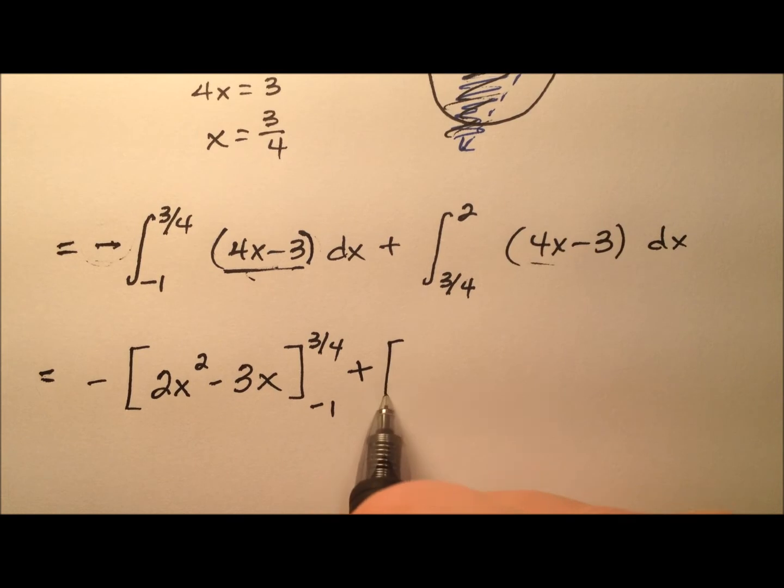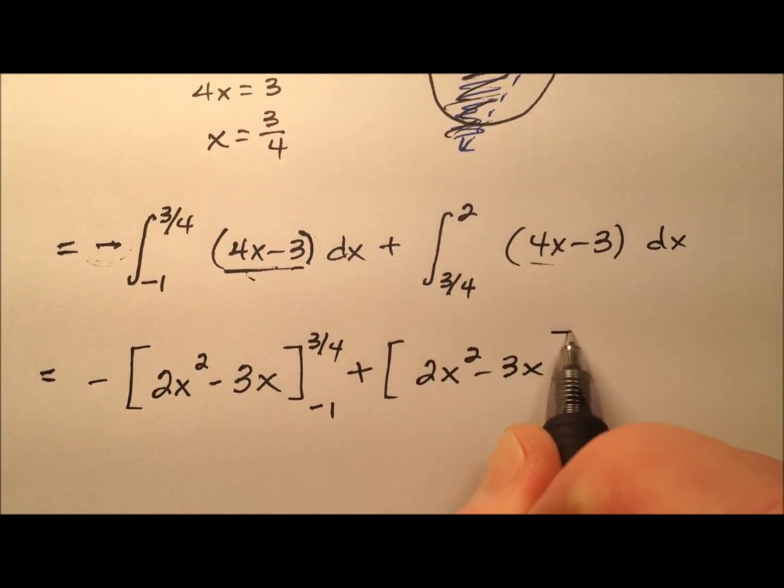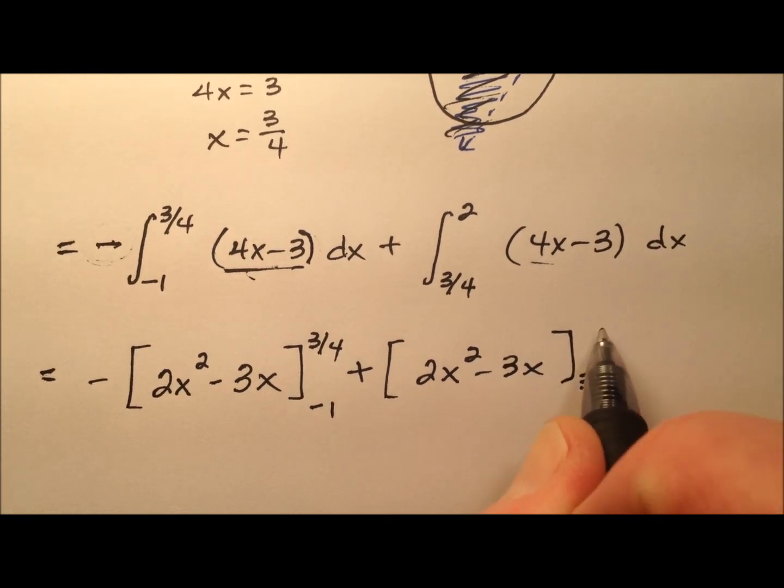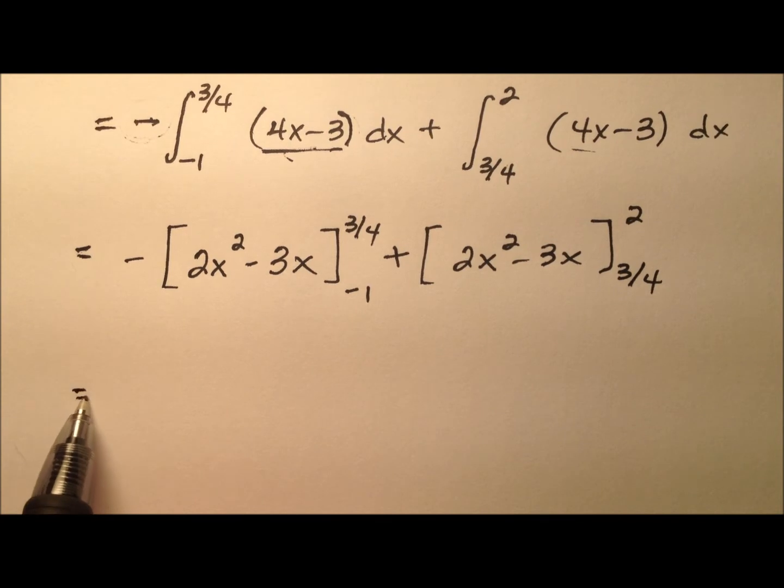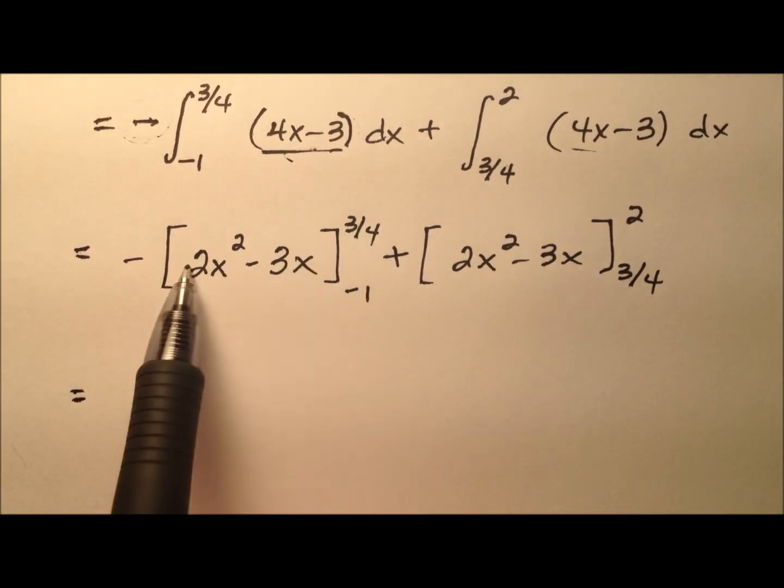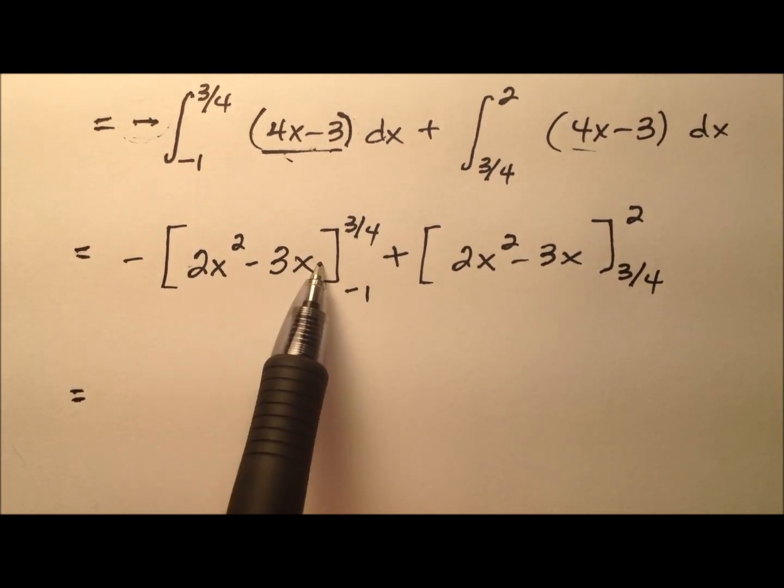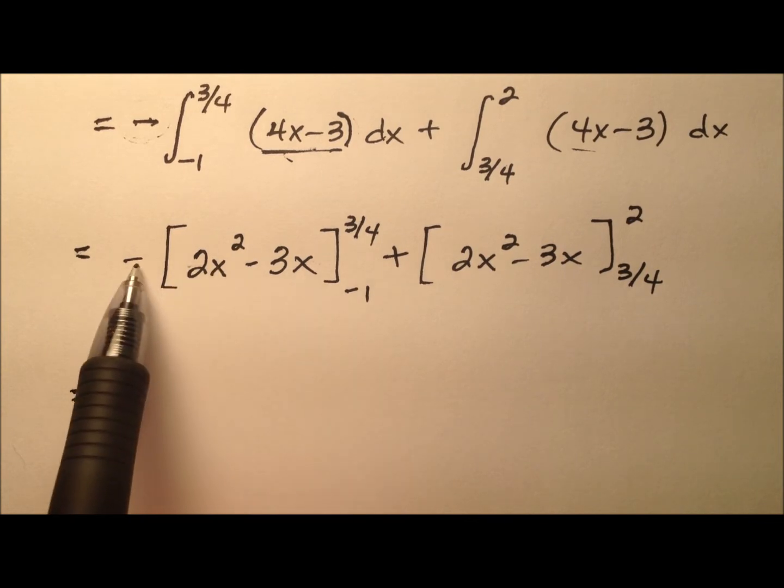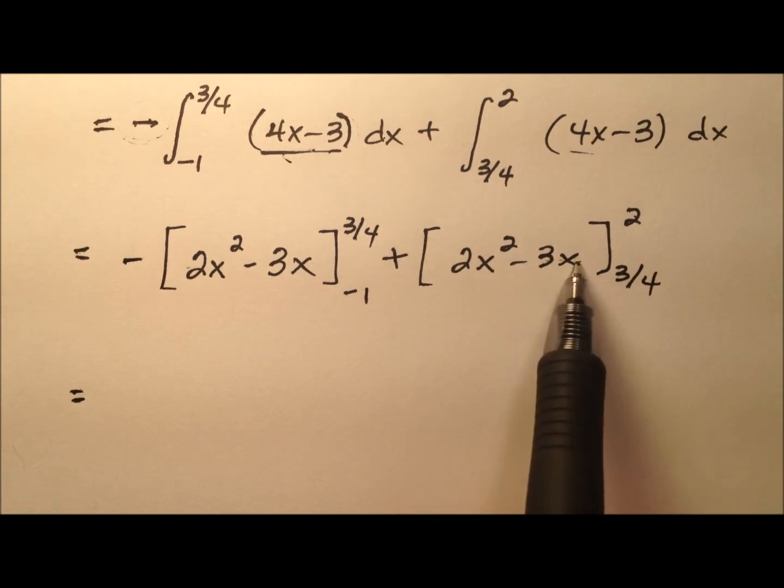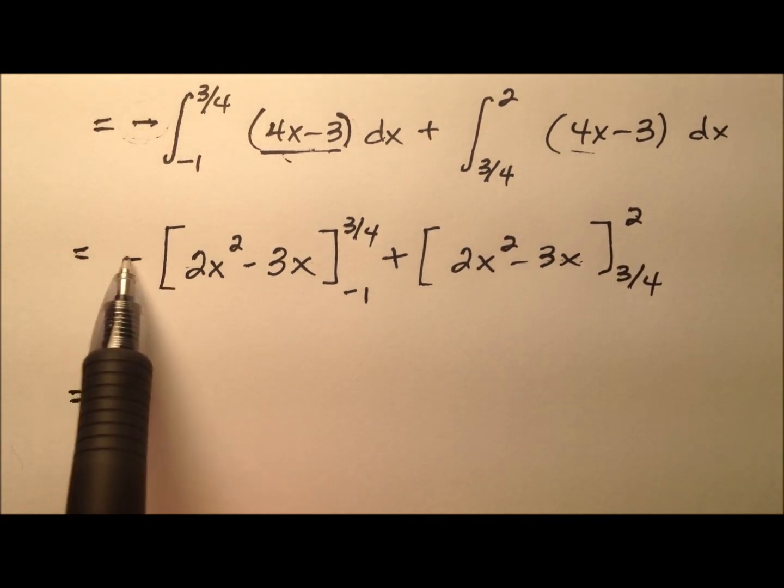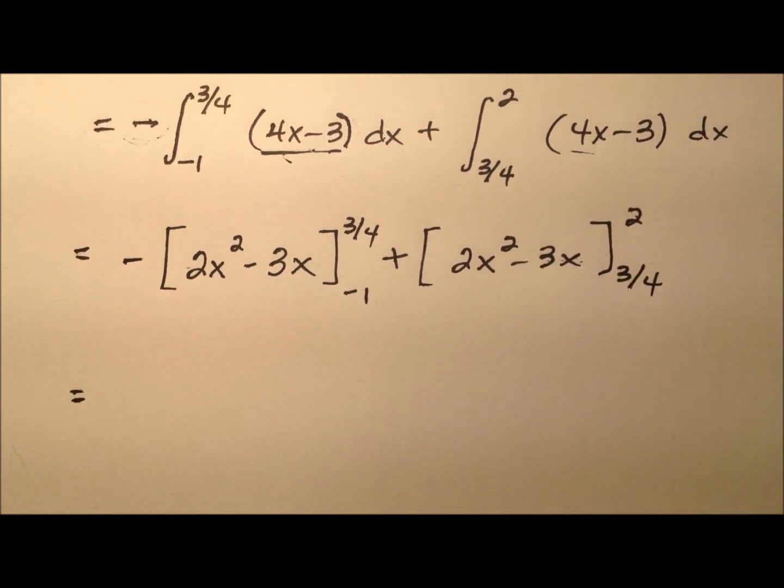So to that, we will add the same thing, 2x squared minus 3x. But this time, we're going from 3 fourths up to 2. So for this evaluation, we're going to plug the 3 fourths in, and then plug the negative 1 in, subtract those values, and then take the opposite of that. And then add, we'll plug the 2 in, plug the 3 fourths in, subtract those, and we'll take all those numbers and add them up. So I'm going to go ahead and do this fairly quickly.